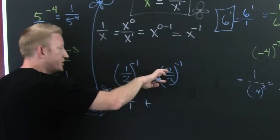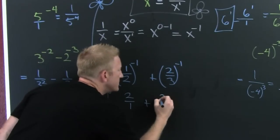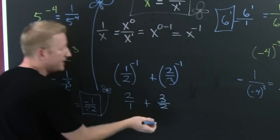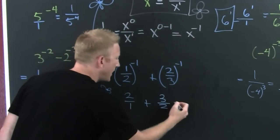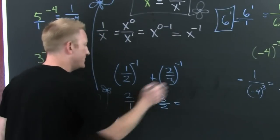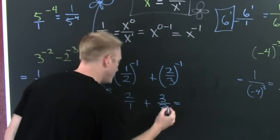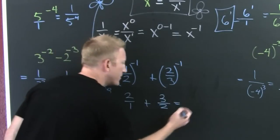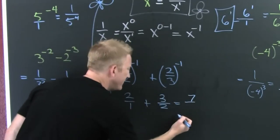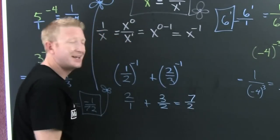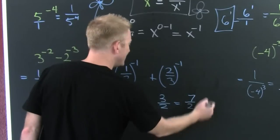This is plus. Ready? Reciprocate. 3 halves. And then we have to add those guys. So that's a 4 plus a 3 is a 7, divided by 2.